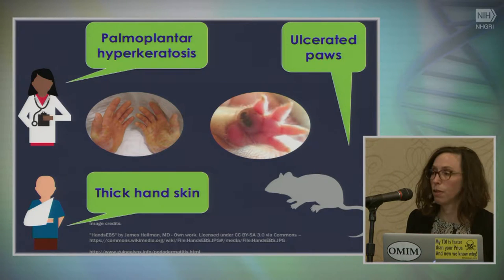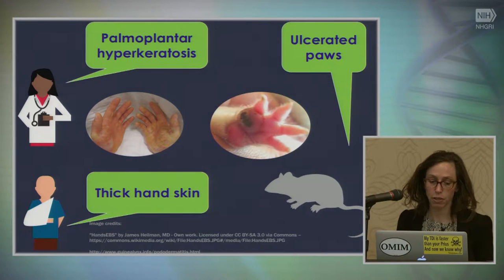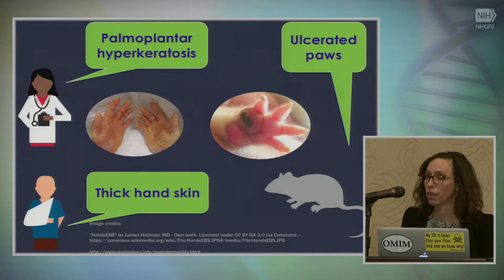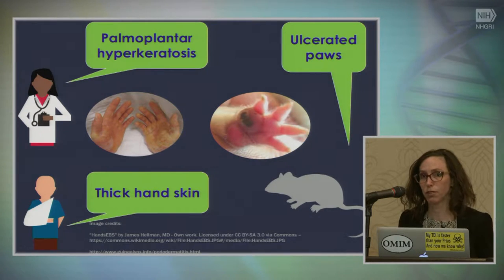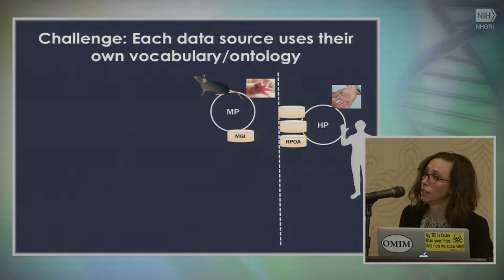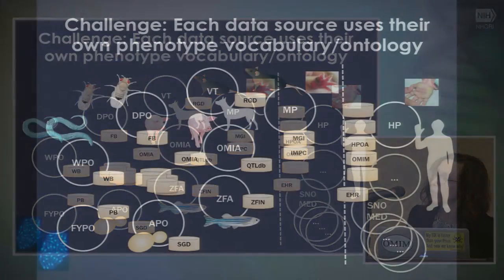The problem is that different communities use different vocabularies to describe their phenotypes. Palmoplantar hyperkeratosis is a clinical term that a patient might describe as having thick hand skin, but the same phenotype seen in a mouse is described as having ulcerated paws. So it's not a string-matching problem to try to associate these phenotypes with one another across species. Every source uses their own vocabulary, and even on the human side we have very many different vocabularies for describing phenotypes.